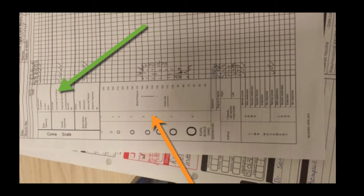If you hear about neuro orbs, that means you need to look at the Glasgow Coma scale, which is the green arrow there on the nursing chart.